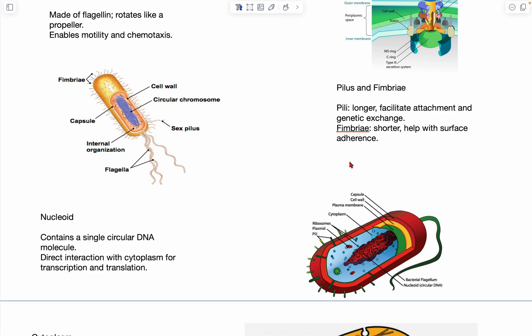And so a quick description of conjugation is that it's like a form of horizontal gene transfer in which one bacterial cell transfers genetic material to another, sort of through a bridge between pili, which is called a sex pilus.